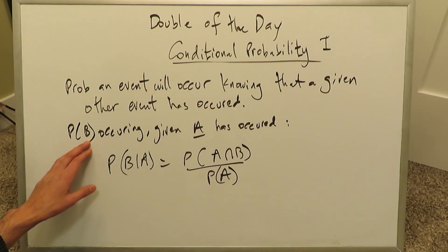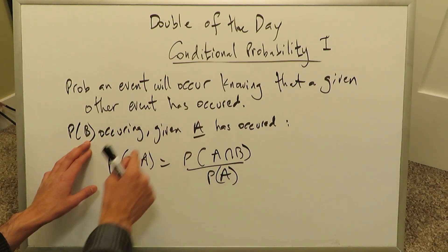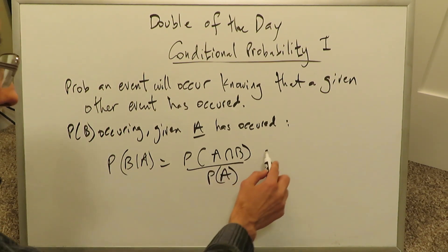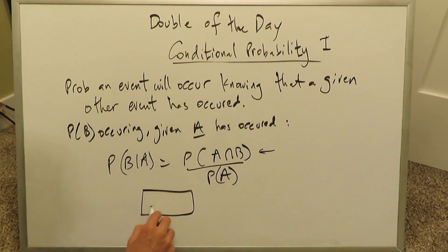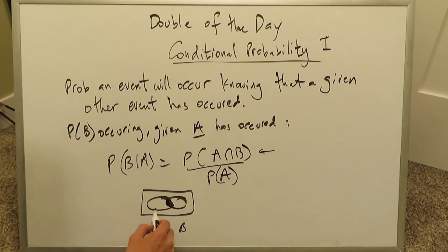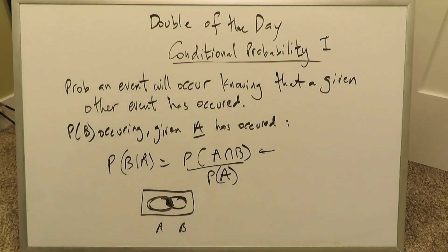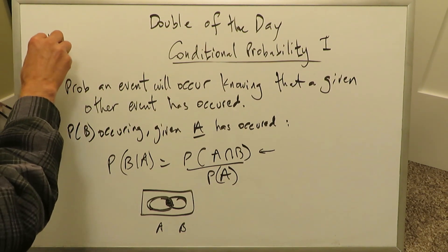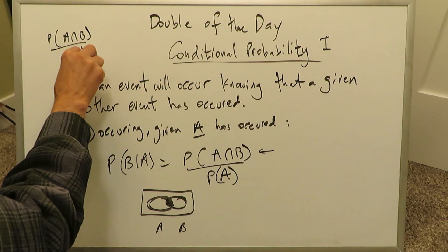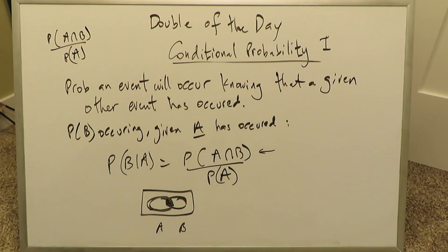Remember, probability of B is what you're looking at now. A is the event that has already occurred which somehow ties in and affects the probability of the current event. Think about Venn diagrams: here's A and here's B, and the intersection refers to both. Probability of A refers to the entire A bubble, and A and B refers to the intersection. A intersection B over probability of A — if you can remember that, these conditional probability questions should not be too hard.